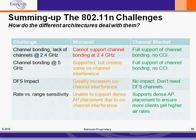Channel bonding at 5GHz is better for the microcell architecture and it's supported, but there's still some co-channel interference potentially, especially if DFS is not available. On the other hand, in the channel blanket architecture there's full support of channel bonding at 5GHz, as there was at 2.4GHz, and of course there's no co-channel interference at 5GHz either.